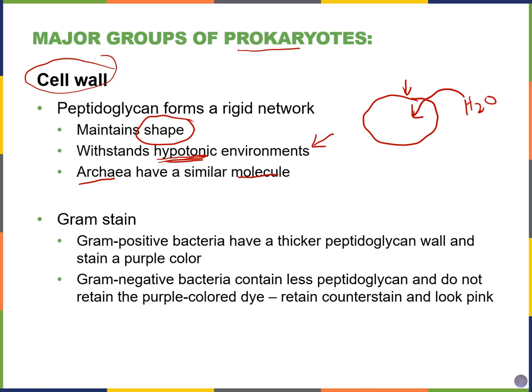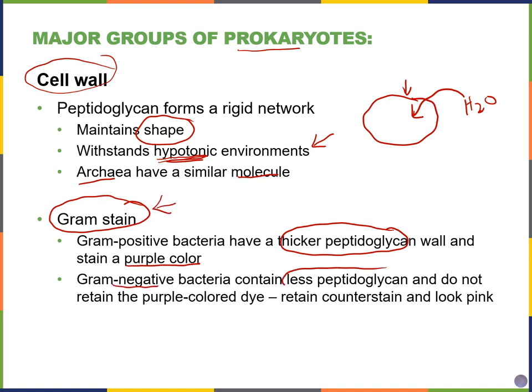We can tell whether a bacterium is gram-positive or gram-negative by performing a gram stain, which we'll do together in lab. Because gram-positive bacteria have a thicker peptidoglycan wall, they stain a purple color after the procedure. Gram-negative bacteria, because they have a thinner wall and less peptidoglycan, will stain pink at the end of the gram stain.